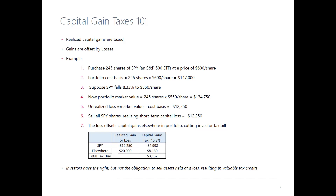The good news is that gains are offset by losses. If you realize a gain of $10,000 on investments in a year but you have a different investment where you sell at a loss for $10,000, you don't owe any tax. You can accumulate credits on losses — hence this idea of harvesting losses. You realize losses, and you can use that to offset capital gains taxes from other parts of your portfolio.